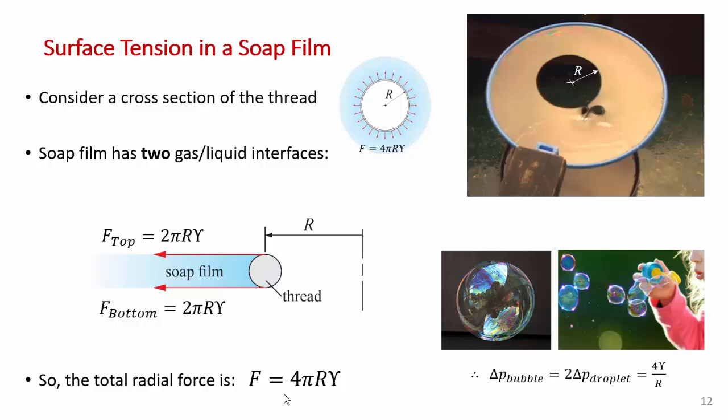For this same reason, the pressure drop across a soap bubble is 2 times the pressure drop across a droplet of soap. We did this analysis before. We found that the pressure drop across the interface of a liquid droplet was 2 times the surface tension upon r. But because a soap bubble has two interfaces, the pressure drop across the interface of a soap bubble is 4 times the surface tension divided by r. You get twice as much pressure rise across that interface.